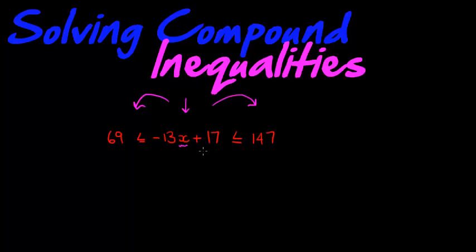So trying to get x on its own, obviously we can see the first thing we're going to have to do is subtract the 17. So we subtract the 17 from all of those.